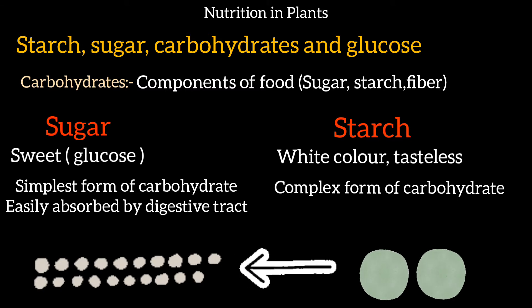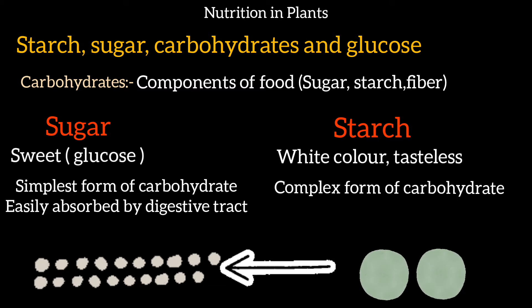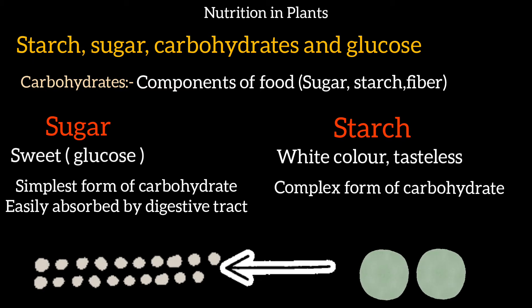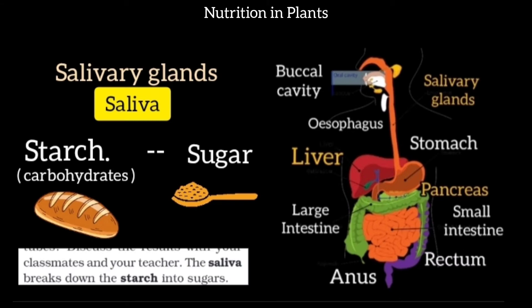Our body needs to break starch down into sugar to use it for energy. Our body needs carbohydrates in simple form — as glucose. So when we eat starch in our mouth, saliva acts on it and converts it into sugar so that our body can use it.